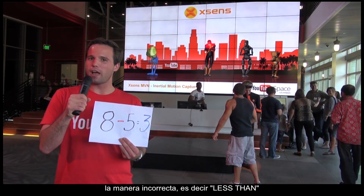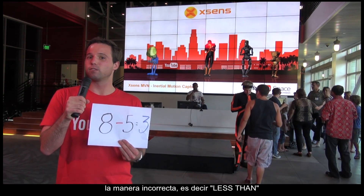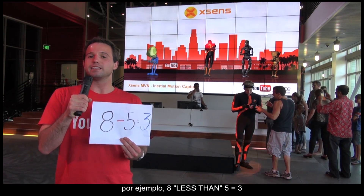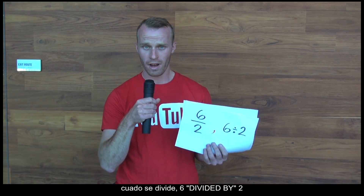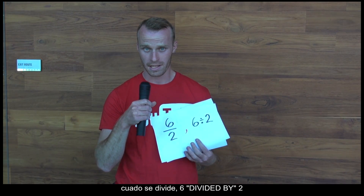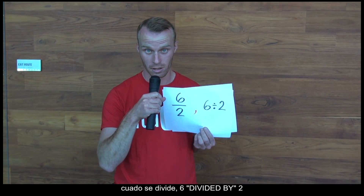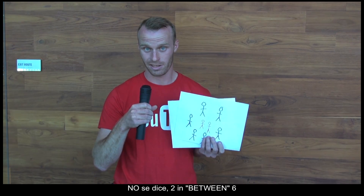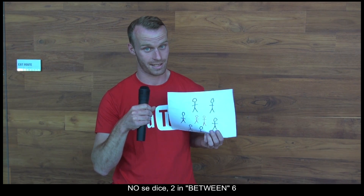The wrong way is to say 'less than'. For example, '8 less than 5 equals 3'. When dividing, we say '6 divided by 2'. We do not say '2 in between 6'.